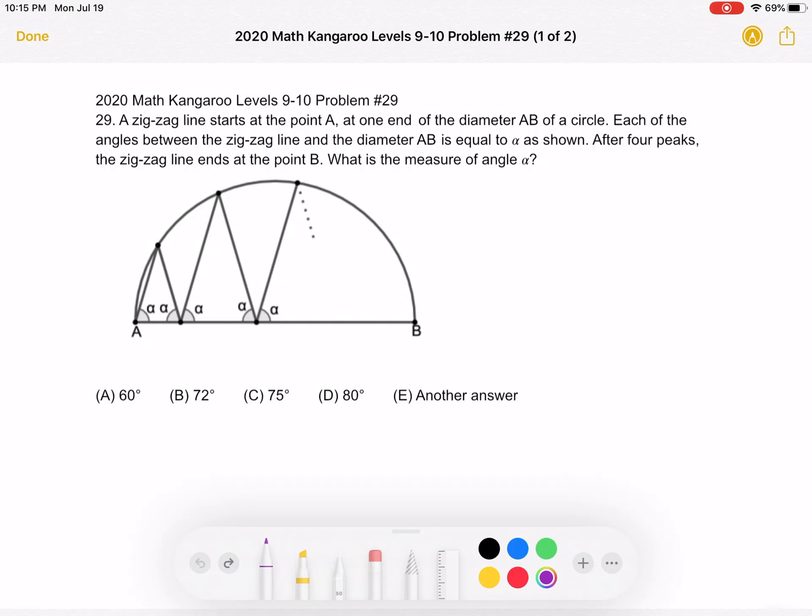A zigzag line starts at point A at one end of the diameter AB of a circle. Each of the angles between the zigzag line and the diameter AB is equal to alpha as shown. After four peaks, the zigzag line ends at point B.